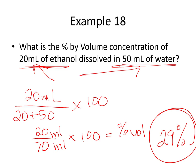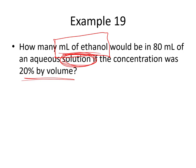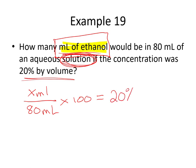Let's try another problem. How many milliliters of ethanol would be in 80 milliliters of an aqueous solution if the concentration was 20% by volume? Here they are giving us the volume of the solution, so we don't need to add anything — we're solving for the volume of the solute. Our unknown x milliliters of ethanol is divided by 80 milliliters of solution, multiplied by 100, and that equals 20 percent.